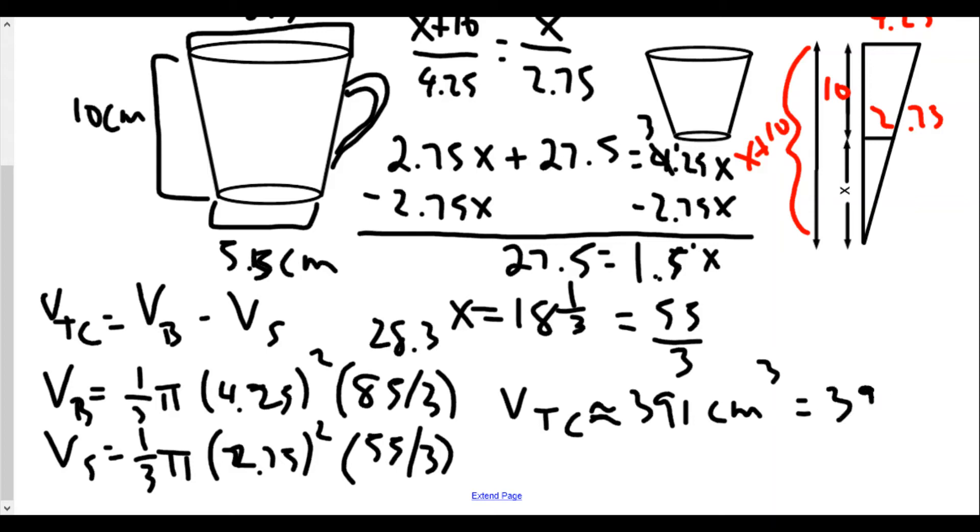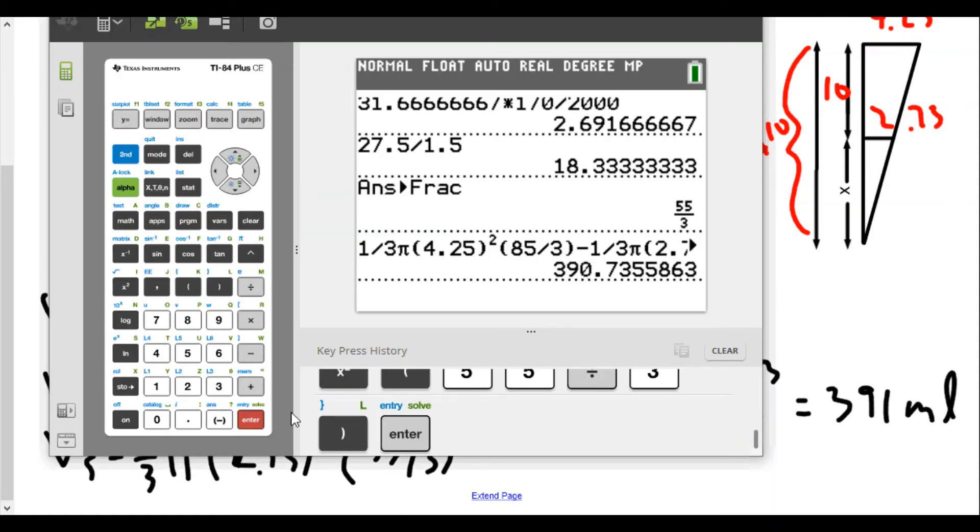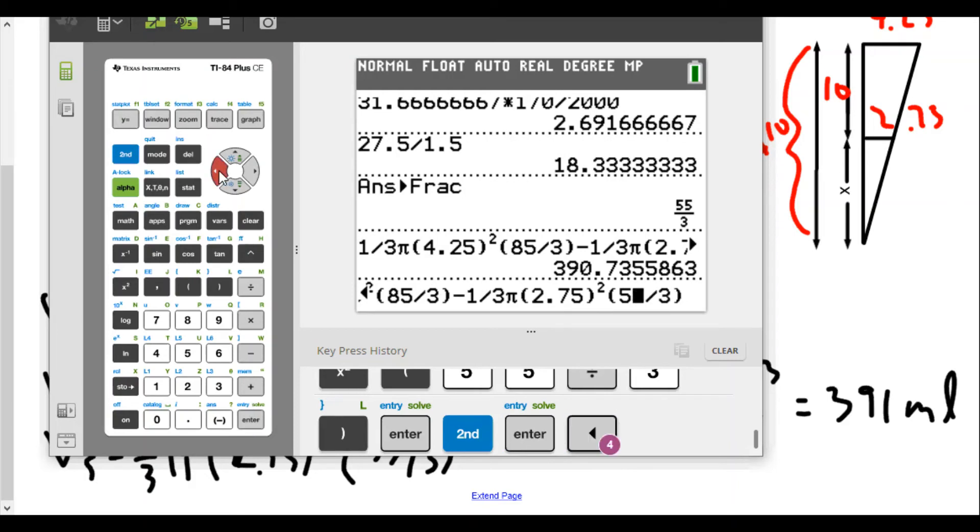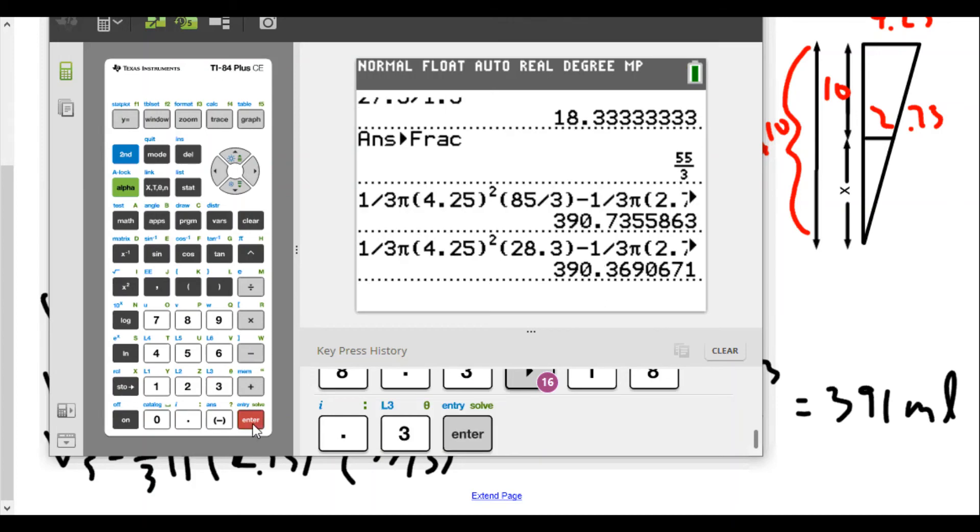Let me try this out again using our decimal of 18.3 and 28.3. Second enter allows us to rewrite everything, then we can go back and change 85 over 3 to be 28.3, and 55 over 3 to 18.3. Hit enter - now we have 390.369, so it's off by a little bit. Because you rounded to 0.3, you're going to get a little bit of rounding down to 390.